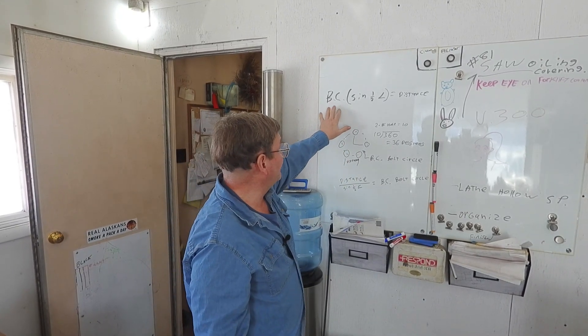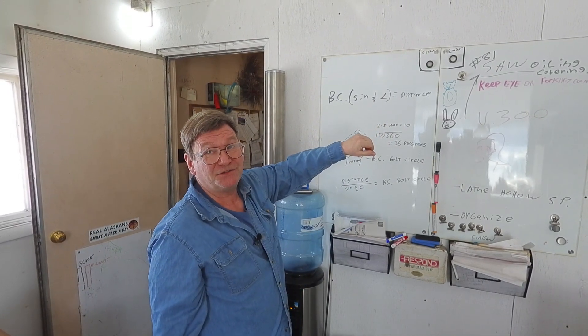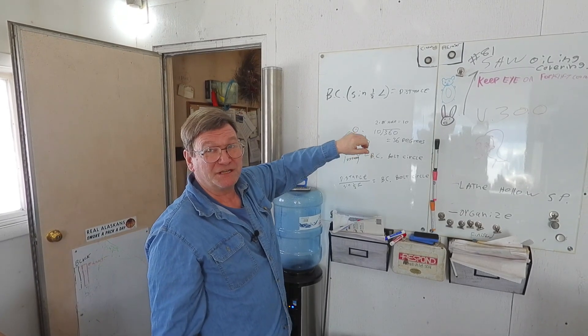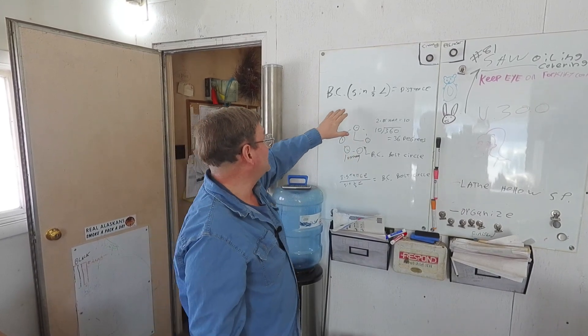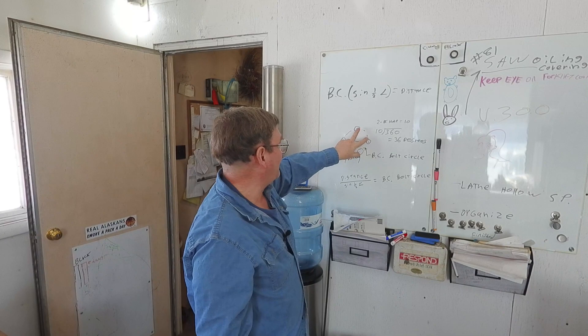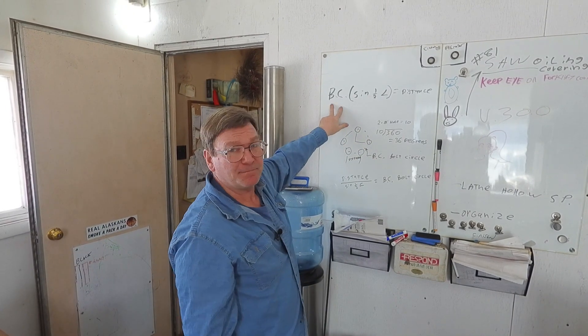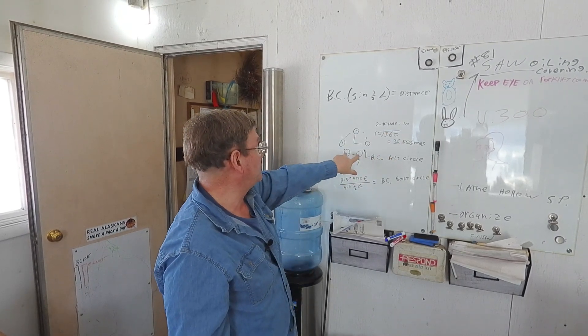I figured this out, remembered it years ago, because I didn't always want to go to the page that tells you use this multiple for this many bolt holes. You'll find that in your machinery's handbook. But if you take the sine of half of the angle between your holes, multiply that by your bolt circle, that will give your distance between two holes.